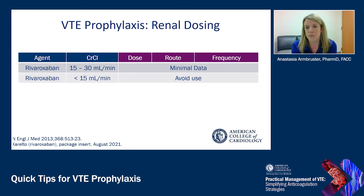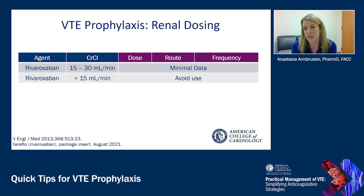For rivaroxaban, the creatinine clearance threshold is different than many of the other indications for this drug, making it yet another instance where we need to carefully monitor renal function in hospitalized patients. Patients included in clinical trials were excluded at 30 mls per minute for creatinine clearance, so there is really minimal data in the patient population of 15 to 30. Per the package insert, you can use the standard dose down to 15 mls per minute, but remember those patients less than 30 were excluded from the clinical trials.